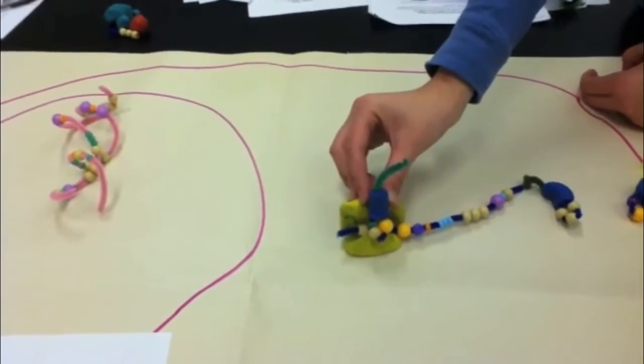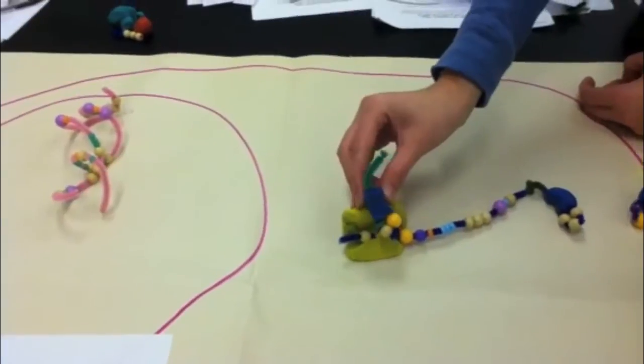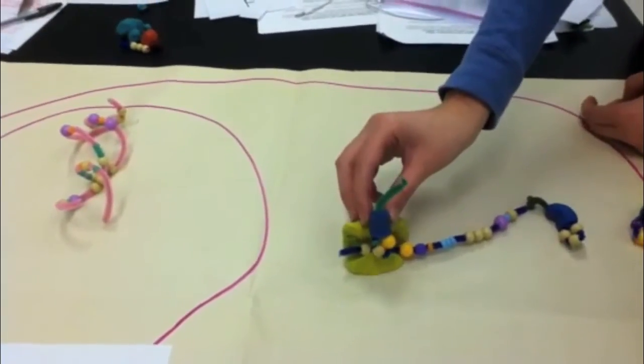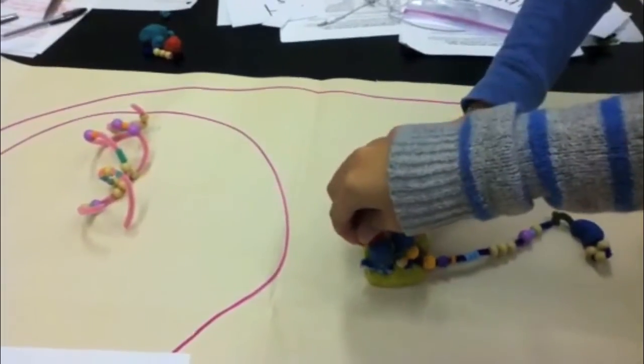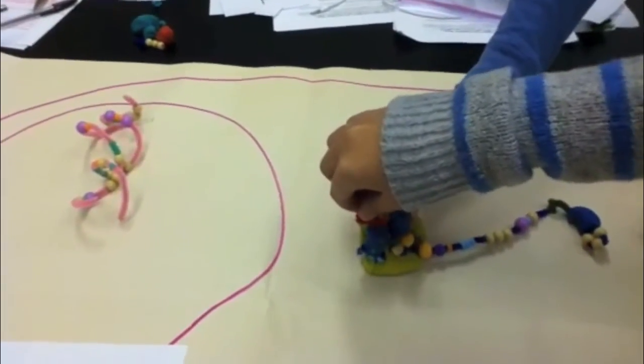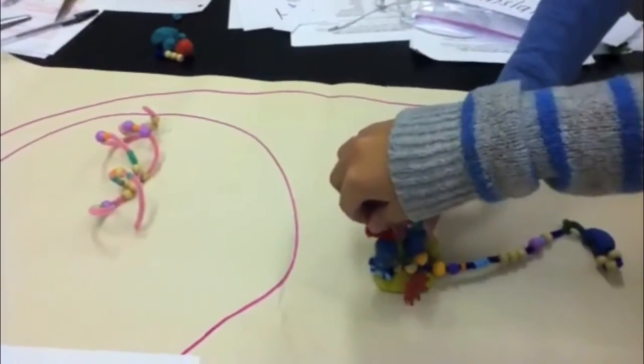An aminoacyl tRNA carrying an amino acid base pairs its anticodons with the complementary mRNA codon in the A site. This process requires the hydrolysis of GTP to GDP.